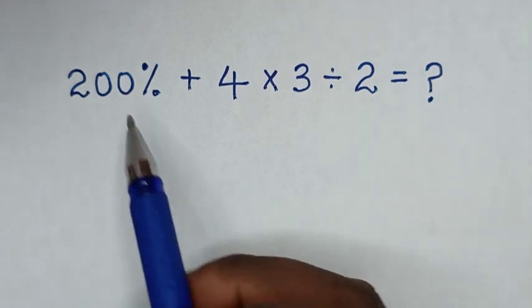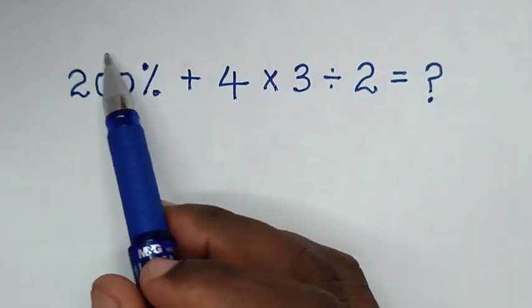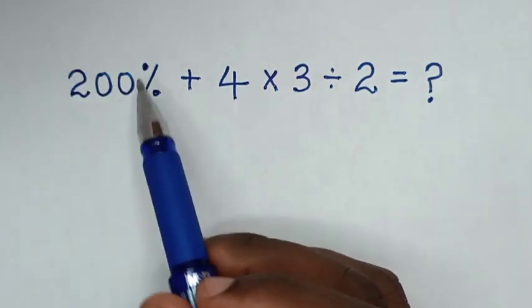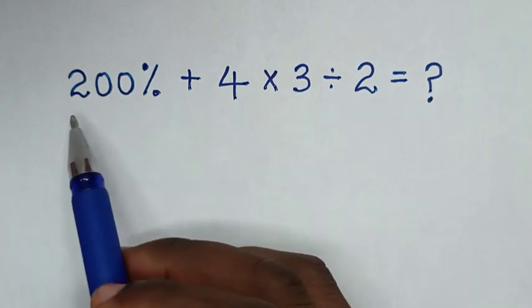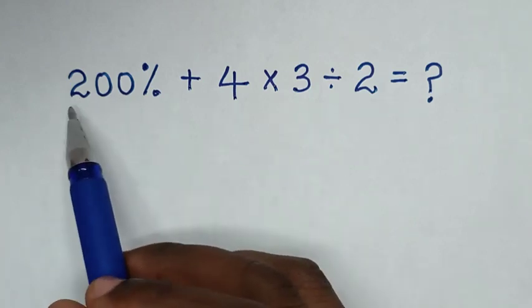First we will deal with this percent. We convert it into numbers. So this 200% we take 200 divided by 100, which is 2.